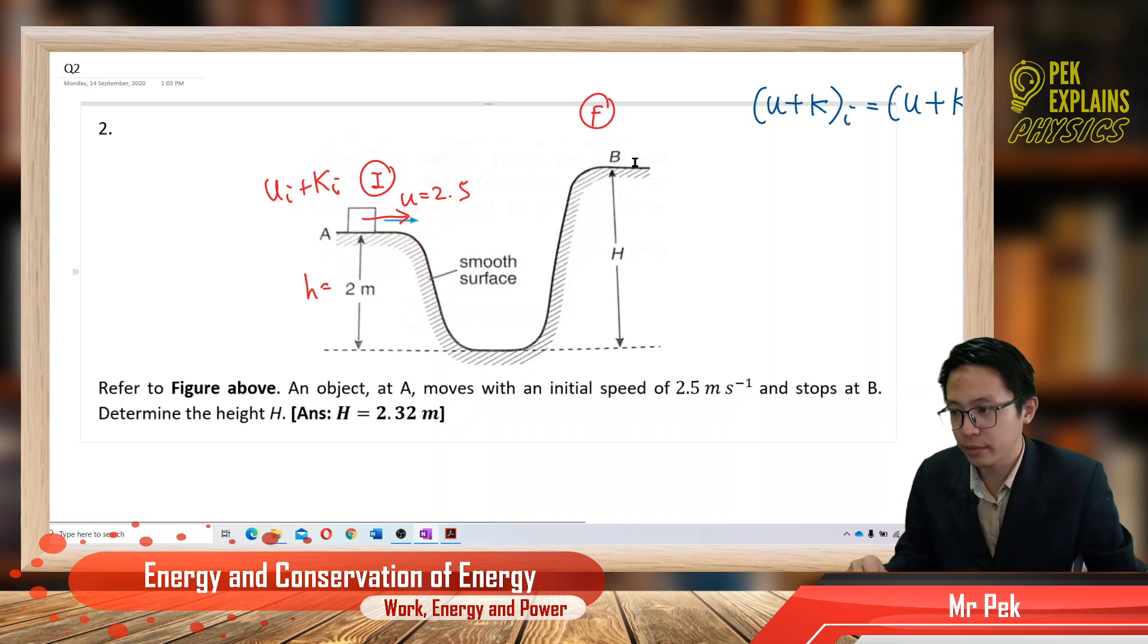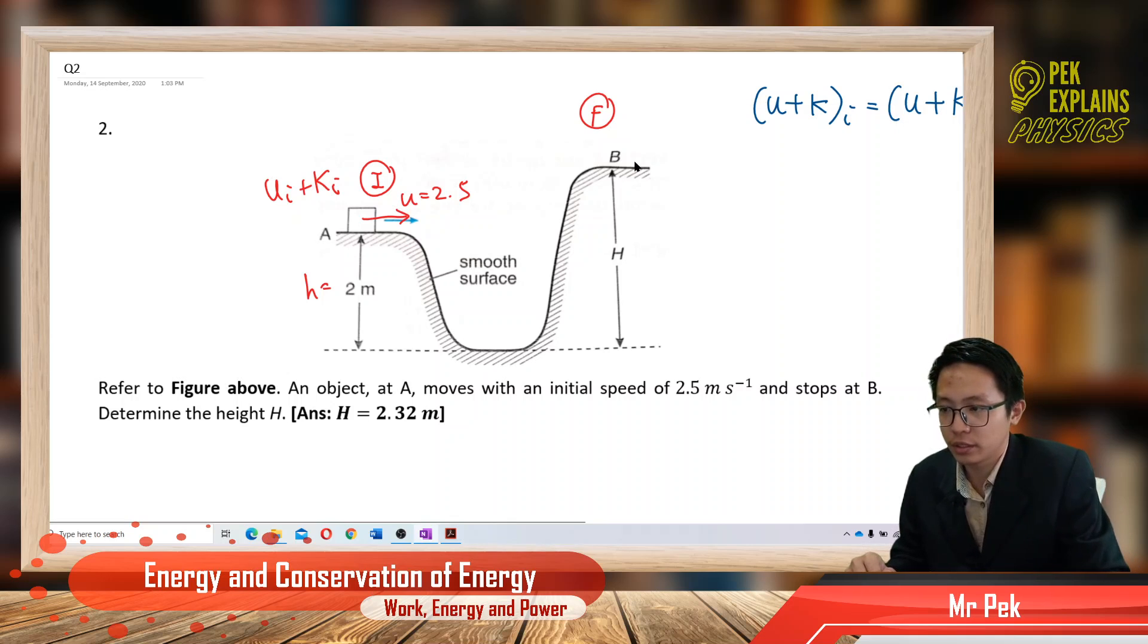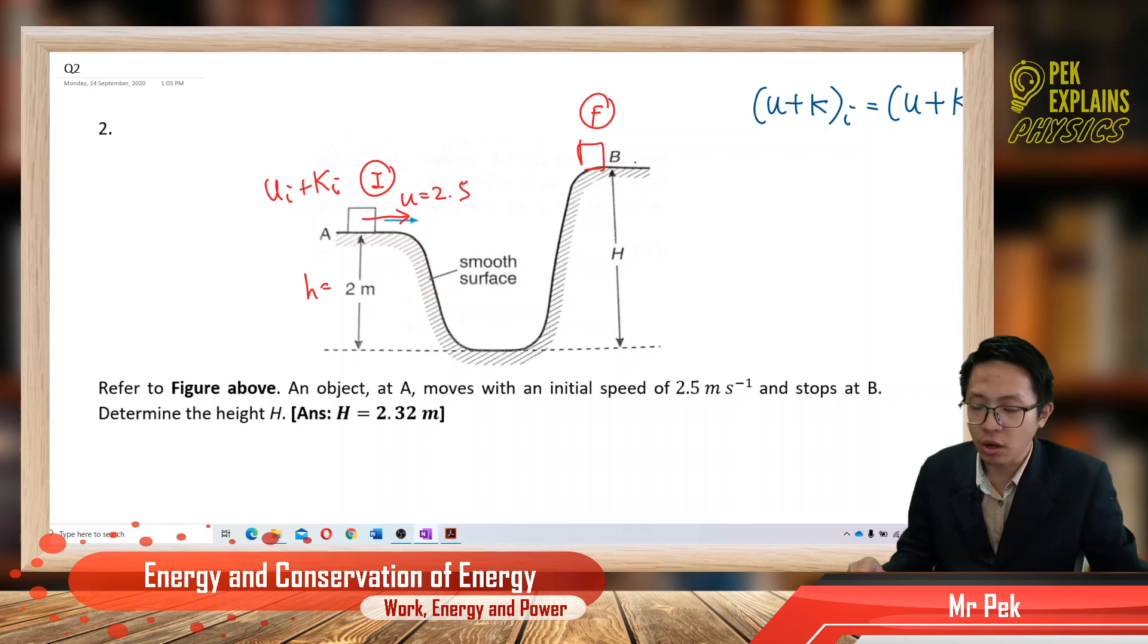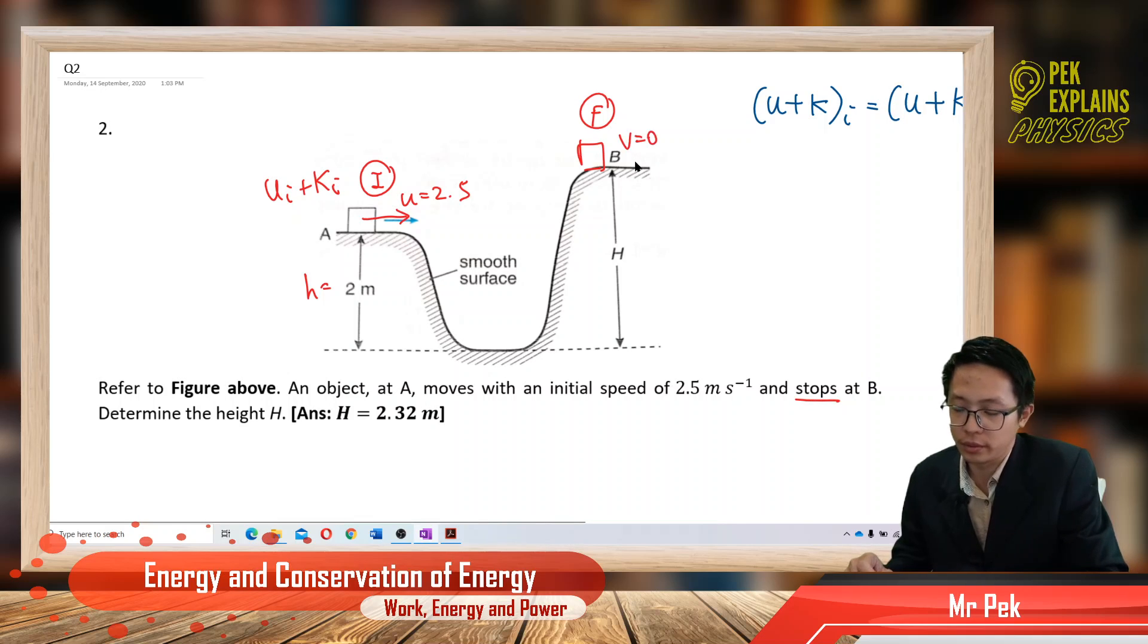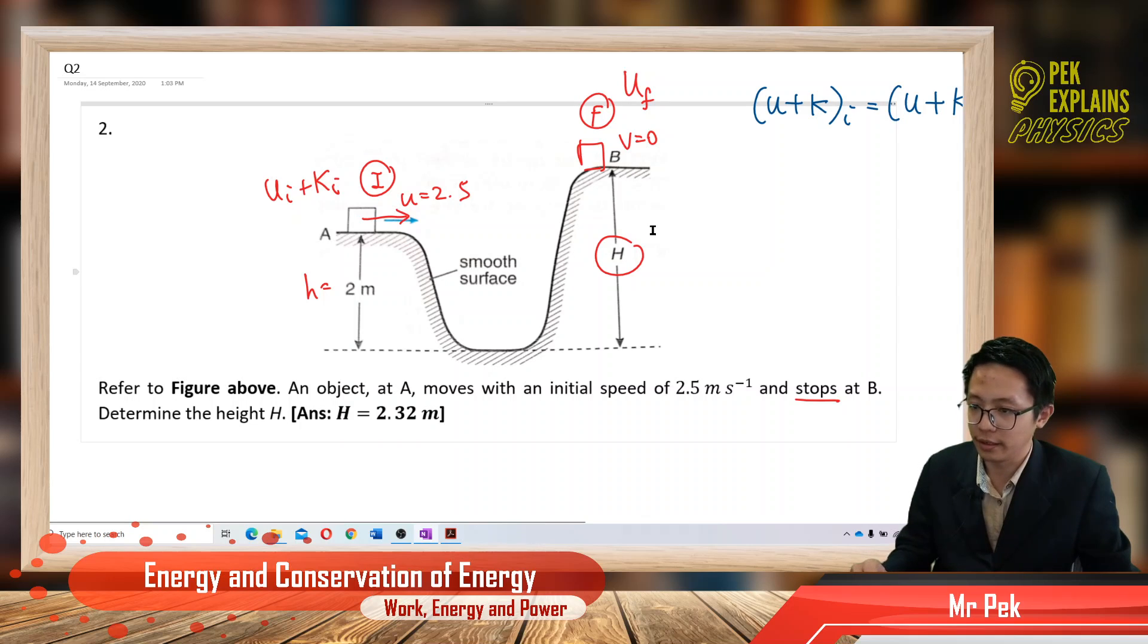But in the end, when the block has reached at the top here, it stops. It says that it stops. That means the velocity is zero over there but it has certain height. That means finally it has the potential energy only, no more kinetic.